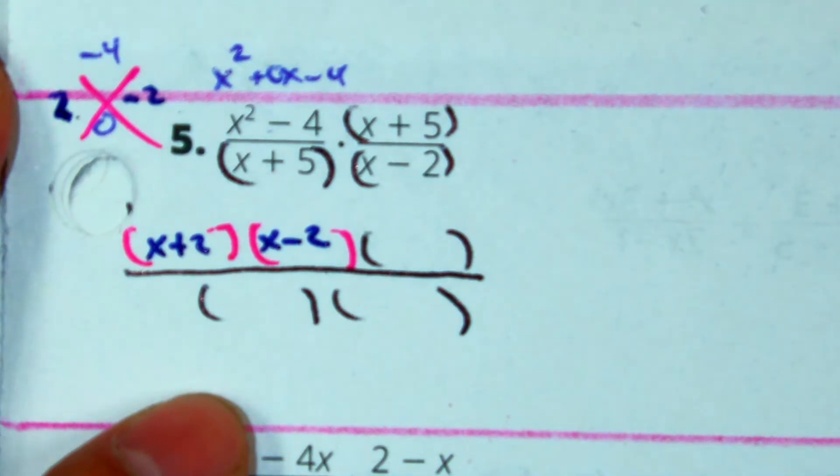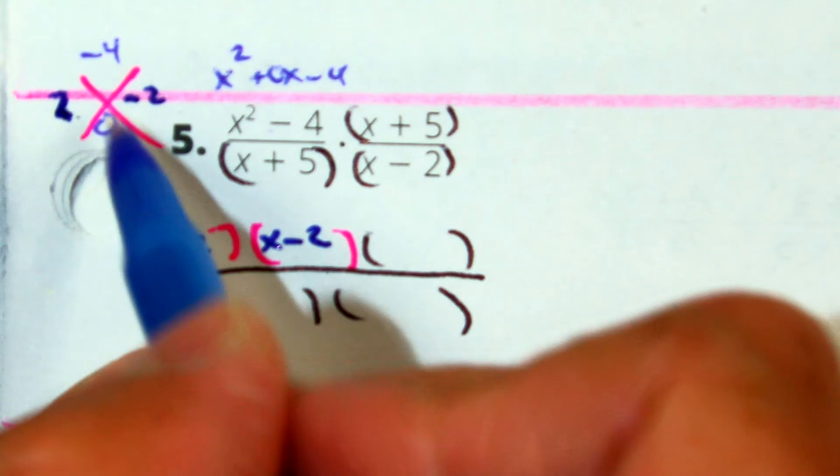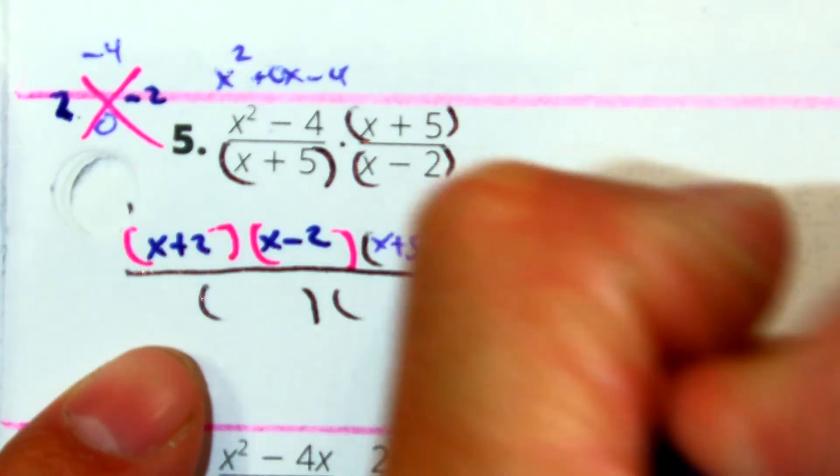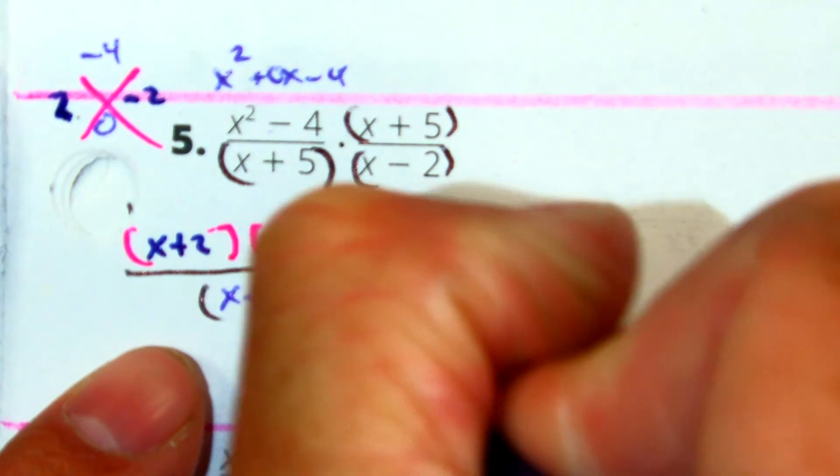Raise your hand if you got that. In this problem, you don't need a box because your a value is equal to 1. x plus 5, x plus 5, x minus 2.